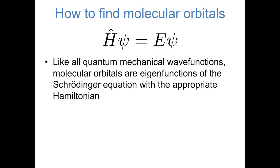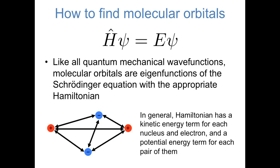Let's think about how we would solve for molecular orbitals. Like all quantum mechanical wave functions, it's a matter of solving the Schrodinger equation. In this case, the potential energy landscape is dictated by the arrangement of nuclei where the atoms are located. As was the case with atoms, the Hamiltonian operator consists of a kinetic energy term for each particle, and potential energy terms for the electrostatic attraction or repulsion of each pair of particles.